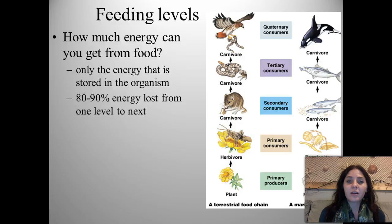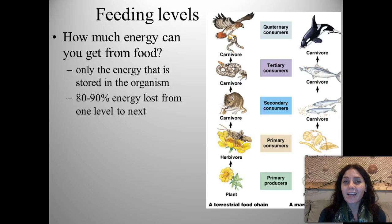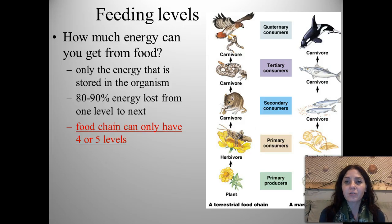So feeding levels — how much energy can you get from food? Only the energy that is actually stored in the organism can be passed on to the next level. 80% to 90% of that energy is lost from one level to the next. And a food chain can only have four or five trophic levels because of the limited energy that can support the highest order of carnivores.